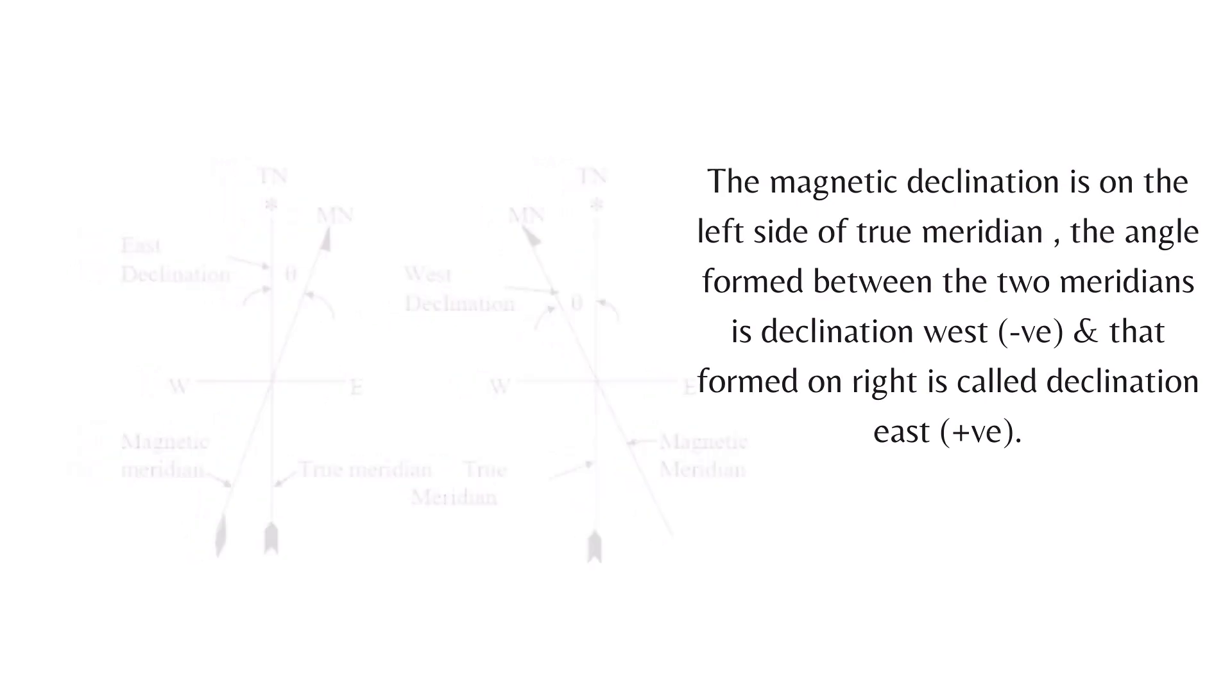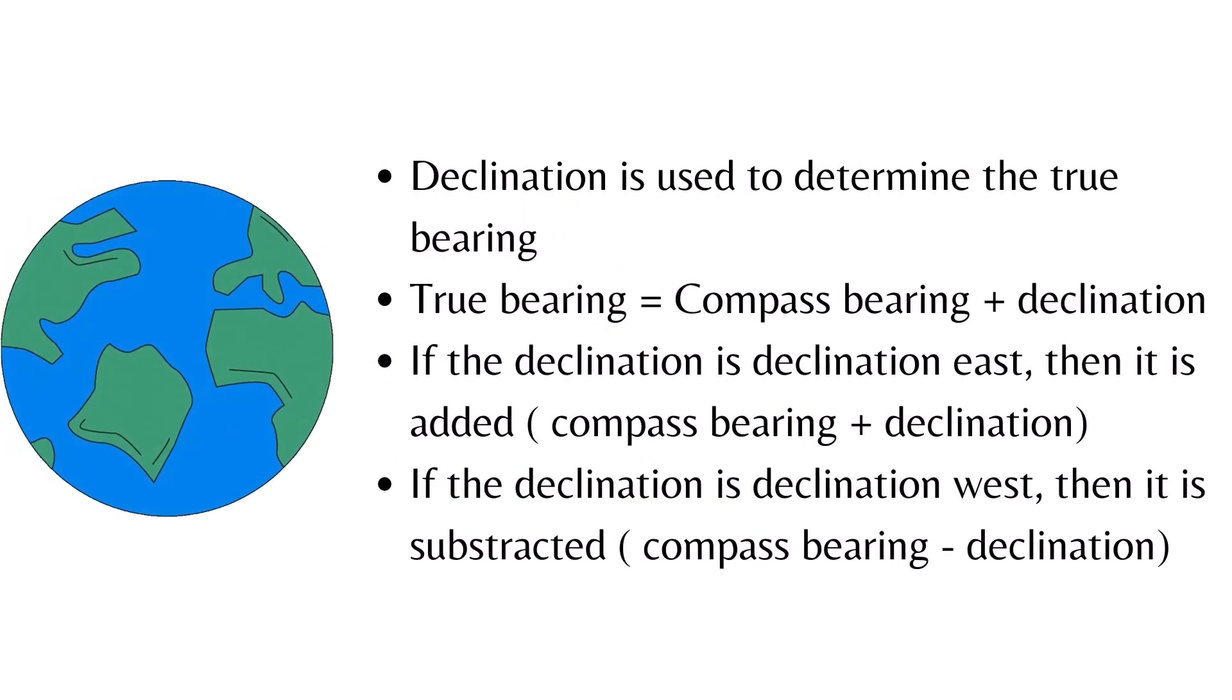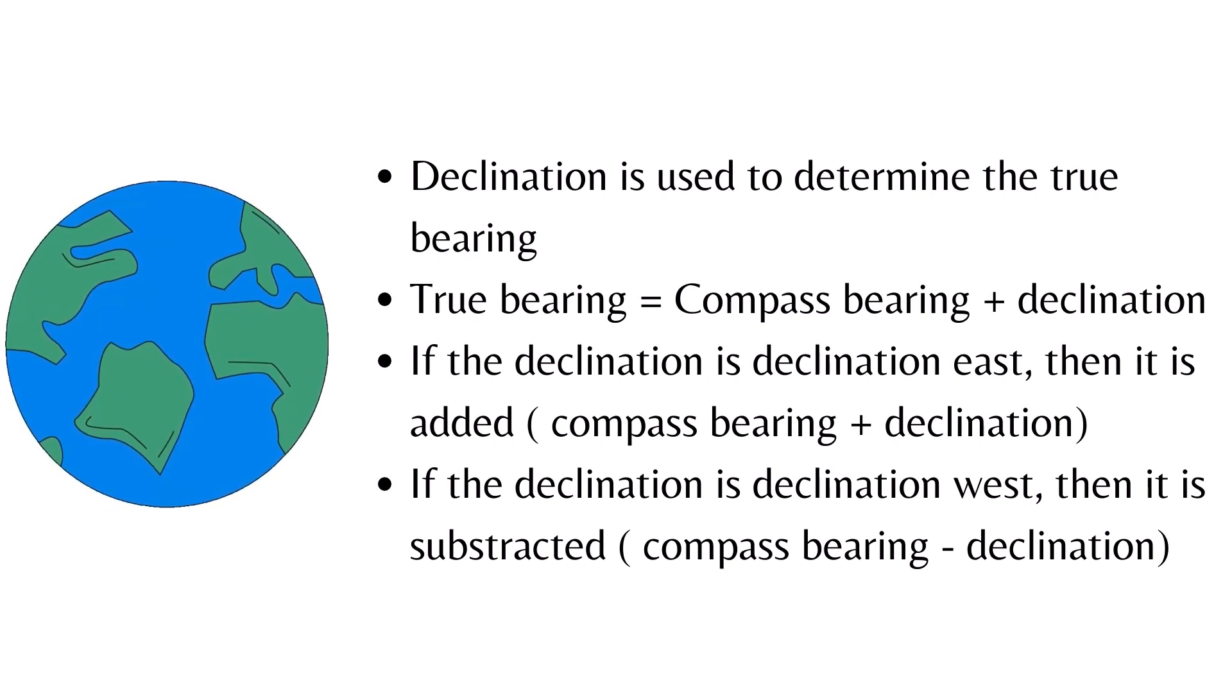The true bearing can be measured as the compass bearing plus the declination. If the declination is declination east, then it is added: compass bearing plus declination. If the declination is declination west, then it is subtracted: compass bearing minus declination.